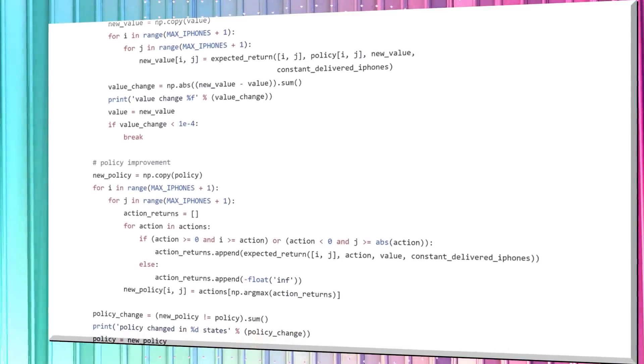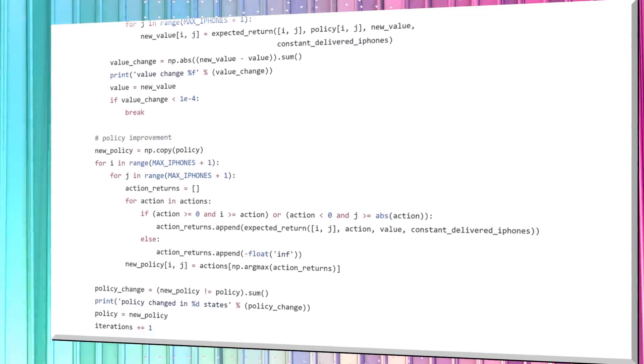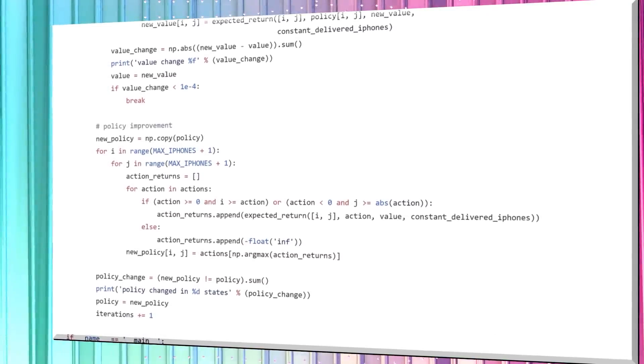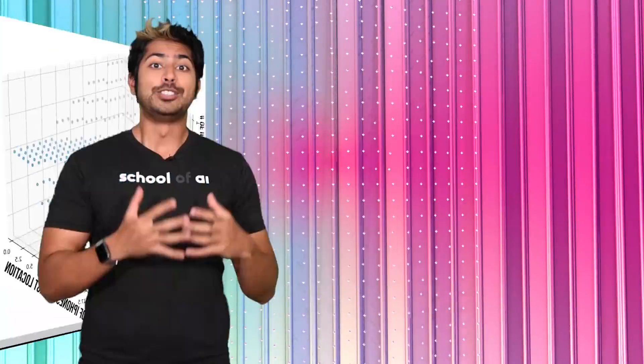Improving the policy involves testing actions at each state, and choosing the best action from them. And, unlike evaluation, we iterate through all the actions, then have a list of returns to look over.